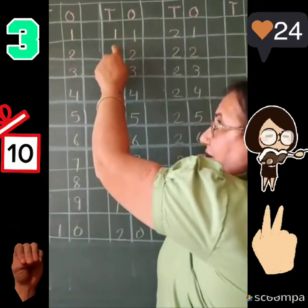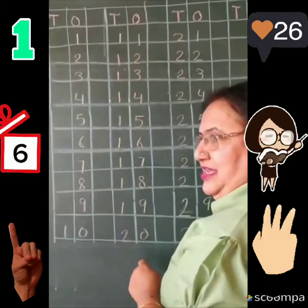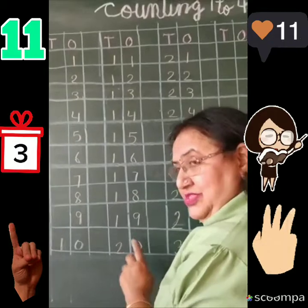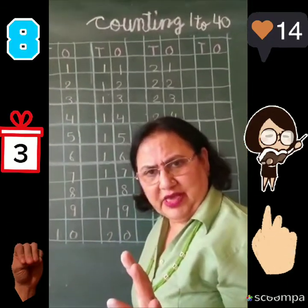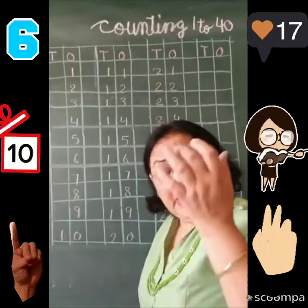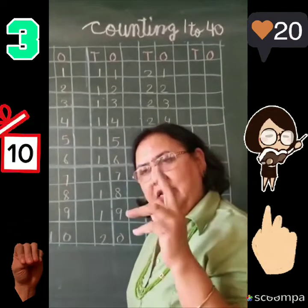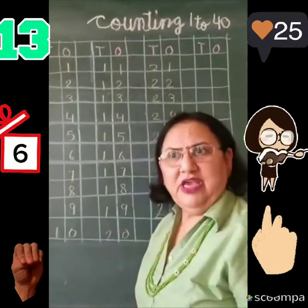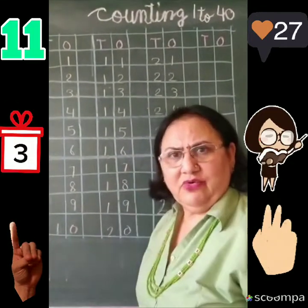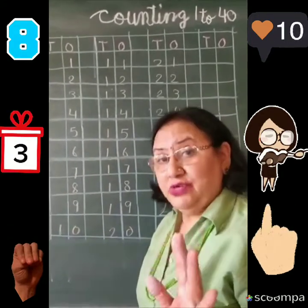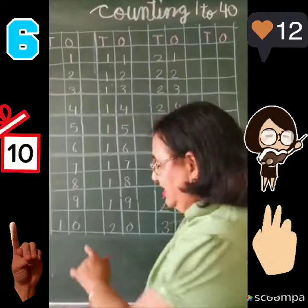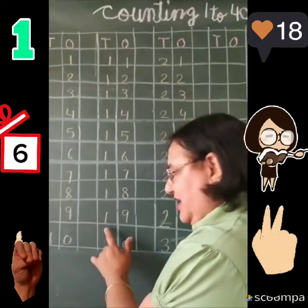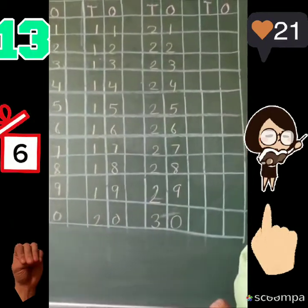Ab main oopar carry kar lengi, aur uske saath one, two likhte jayengi. Last line — nine ke niche always come zero. Nine ke niche zero — yeh bar bar hum mind mein rakhengi. Ma ma poochay ki what comes after nine? Zero. What comes after nine? Zero. Nine ke niche jab numbers aata hai, number will be changed. One ke niche two, two ke niche three.